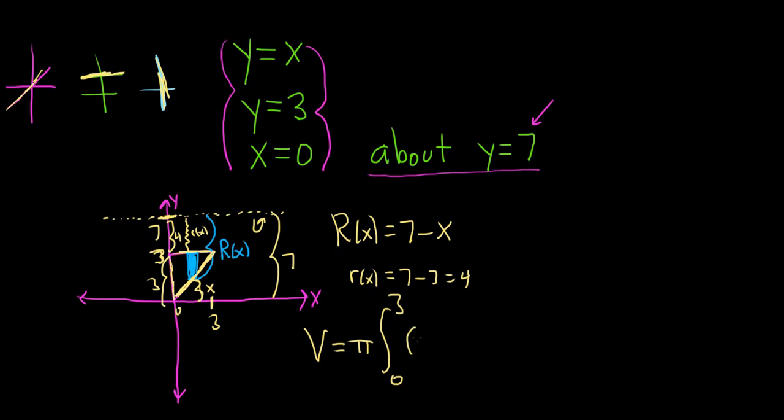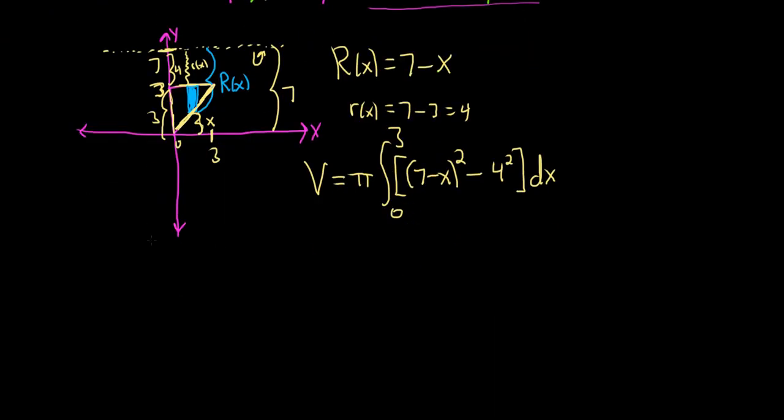and it's big R squared, so 7 minus x quantity squared, minus, and then little r squared, so 4 squared dx. So this is the integral that will give us the volume. Let's go ahead and grind this out.